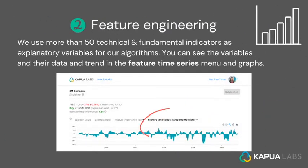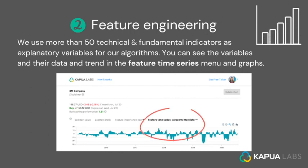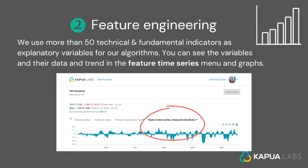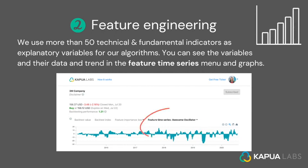Step number two: feature engineering. We use more than 50 technical and fundamental indicators as explanatory variables for our algorithms. You can see the variables and their data and trend in the Featured Time Series menu and graphs.